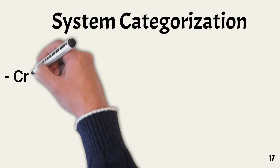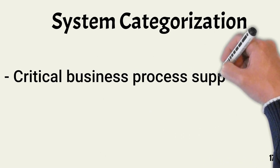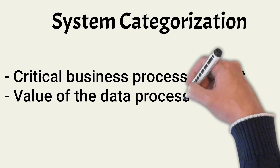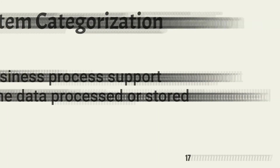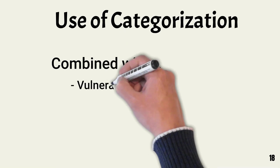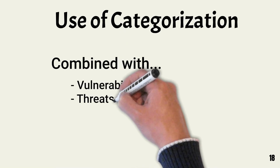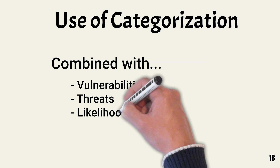In this lesson, I focused on data. However, we also categorize systems. How we categorize a system depends on its value to supporting critical business processes. It also depends on the classification and categorization of the data it processes or stores. We use data and system categorizations when performing risk assessments. They enable the assessor to accurately determine risk.